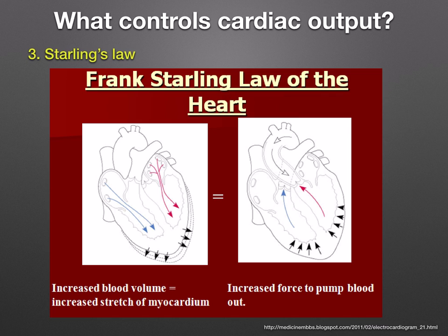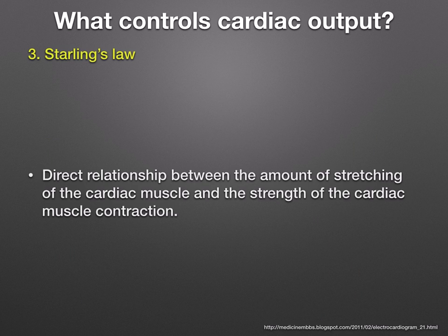Looking at Starling's law — the Frank-Starling law of the heart states that when there's an increased volume of blood entering the heart, there will be an increased stretch of the myocardium, resulting in an increased force to pump the blood out of the heart. You can see this in the diagram: blood entering the heart causes a stretch of the myocardium, so there's increased force to pump the blood out. There is a direct relationship between the amount of stretching of the cardiac muscle and the strength of contraction — the more stretch due to the volume of blood entering, the greater the muscle contraction.